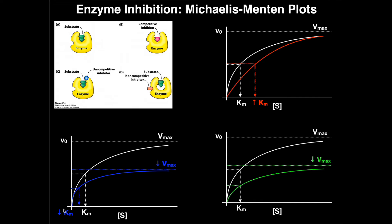An uncompetitive inhibitor decreases the Vmax of the enzyme and also decreases the Km of the enzyme. Looking at the Michaelis-Menten plot, the white curve is the normal unaffected enzyme with no inhibition. When we add an uncompetitive inhibitor, we get the blue curve — it appears to plateau much more quickly, and you can clearly see the Vmax is different (decreased). Compare this to the competitive inhibitor case, where both curves go to the same Vmax.